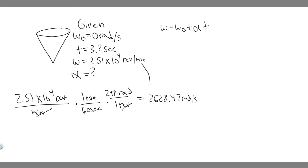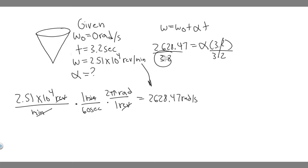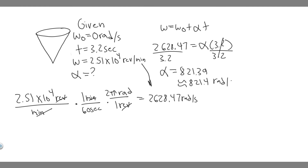Now that we have the correct units, we plug in: 2628.47 equals omega-zero, which is 0, plus alpha times T. Since omega-zero is zero, we have 2628.47 = alpha × 3.2. Dividing both sides by 3.2 gives alpha approximately equal to 821.4 radians per second squared, because we're dividing radians per second by seconds. This is the answer to Part A — the angular acceleration.